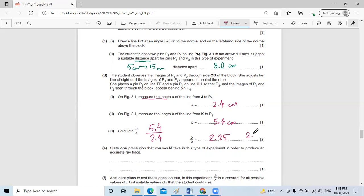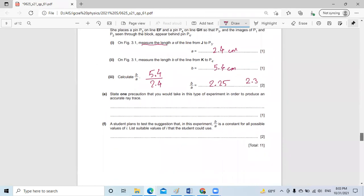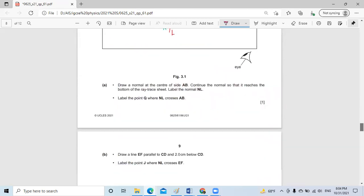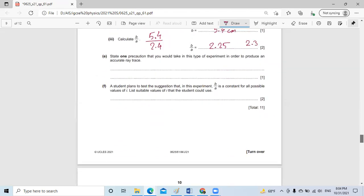State one precaution that you would take in this experiment in order to produce an accurate trace. Now to do that, I can do many things. I can view the basis of the pins—or the pins at least more than five centimeters apart. So these pins are close, or I can ensure that the pins are vertical.